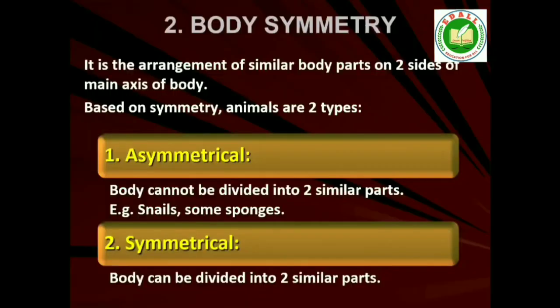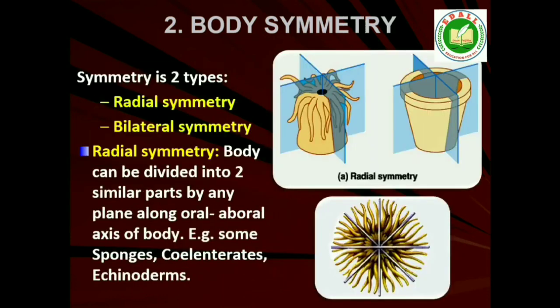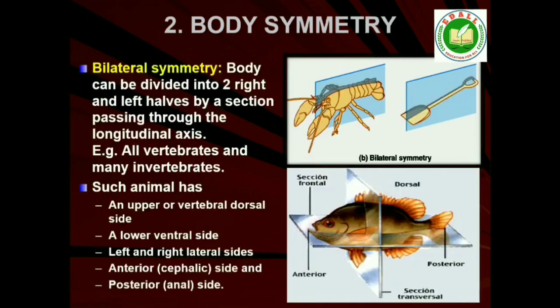2. Symmetry: Animals can be categorized on the basis of their symmetry. Sponges are mostly asymmetrical, that is, any plane that passes through the center does not divide them into equal halves. When any plane passing through the central axis of the body divides the organism into two identical halves, it is called radial symmetry. Coelenterates, ctenophores and echinoderms have this kind of body plan. Animals like annelids, arthropods, etc., where the body can be divided into identical left and right halves in only one plane, exhibit bilateral symmetry.